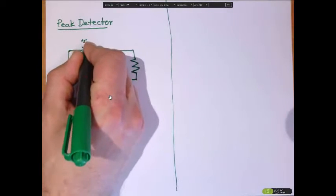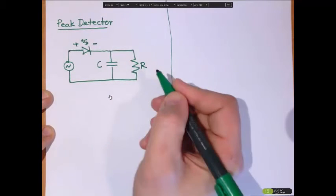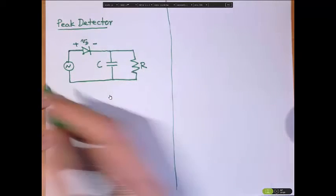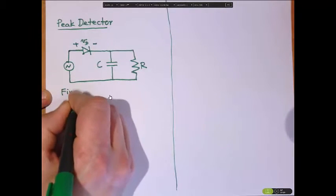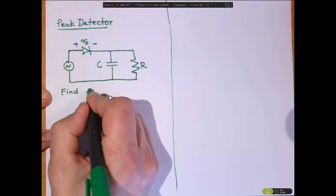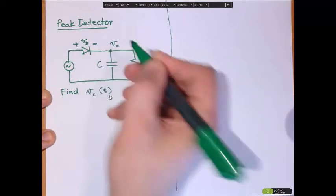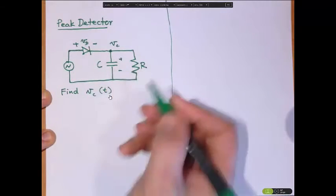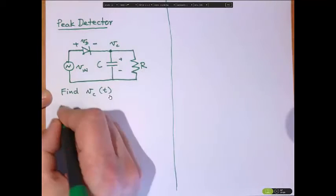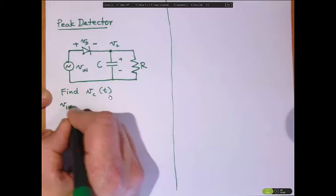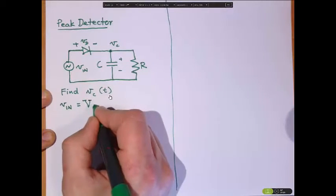This we'll call the diode voltage. This we'll call the capacitance and the resistance. And the challenge is going to be to find the voltage on the capacitor as a function of T. Given that V_in, which is the voltage on the input, let's just assume for now it's a cosine.